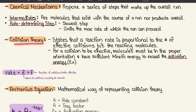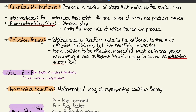Moving on to collision theory: it states that reaction rate is proportional to the number of effective collisions between the reacting molecules. For a collision to be effective, molecules must be in the proper orientation, and must have sufficient kinetic energy to exceed the activation energy, written as EA. The equation for that is rate equals Z times F, where Z is the total number of collisions occurring per second, and F is the fraction of collisions that are effective.